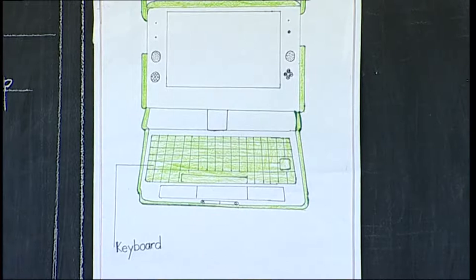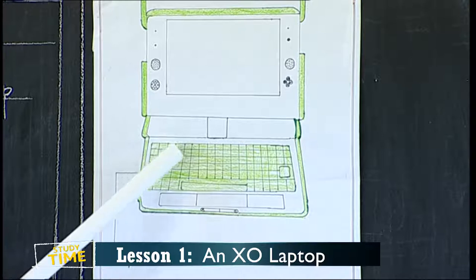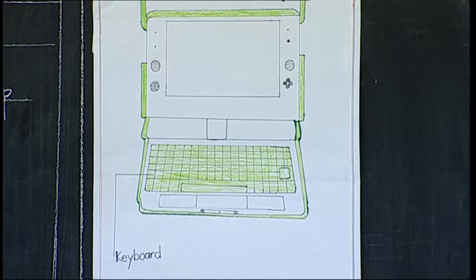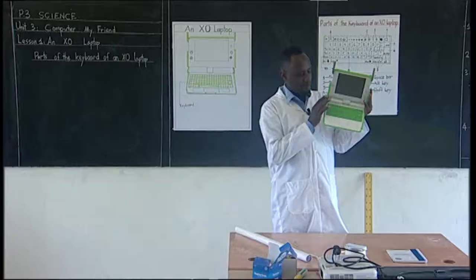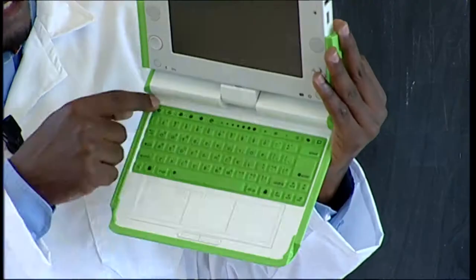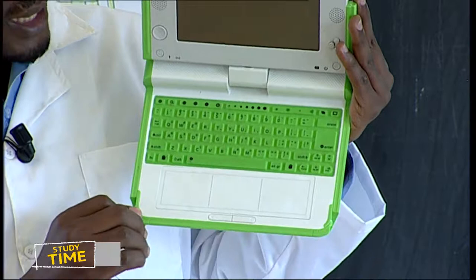So lastly, let's look at this part here, which is shaded green. You can tell me its name. Yes, that is the keyboard. That is the keyboard — it is even labeled 'keyboard.' Where do we find a keyboard on our XO laptop? This is the keyboard. This part here runs from this side going this side, down here, down here. This green part here is the keyboard of an XO laptop.